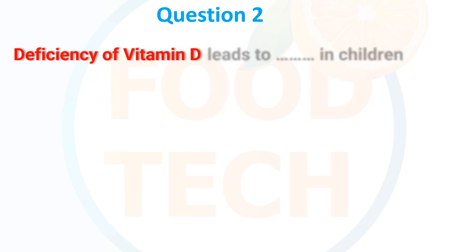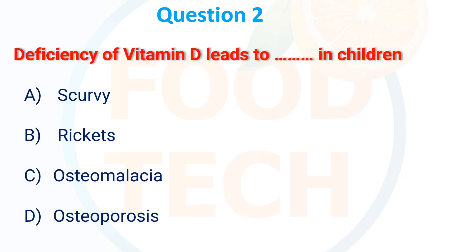Deficiency of vitamin D leads to, in children: A. Scurvy, B. Rickets, C. Osteomalacia, D. Osteoporosis. The correct answer is B. Rickets.